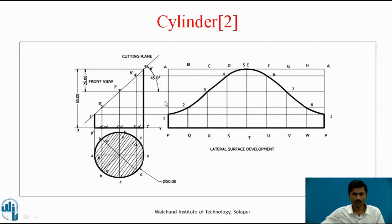To get the development of the truncated cylinder, we transfer these points onto the corresponding lines or generators on the development plane. The first point is on the PA generator, so it appears on the PA line, both at the start and end of the stretch-out. Similarly, point 2 is on generator QB, point 8 is on WH — both at the same height — and similarly points 3 and 7, 4 and 6, and point 5 are projected onto the development plane. Once we have all the intersection points, we connect them with a curved profile, because the cylinder has a curved profile. This dark plane is called the development of the truncated cylinder.